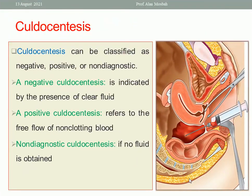Culdocentesis may be indicated to confirm the diagnosis. A speculum is inserted to elevate the posterior lip of the cervix, then a needle is inserted through the posterior fornix into the pouch of Douglas and aspirated. If blood is aspirated, this is a positive culdocentesis. If clear fluid, it is negative. If no fluid, it is called non-diagnostic culdocentesis.